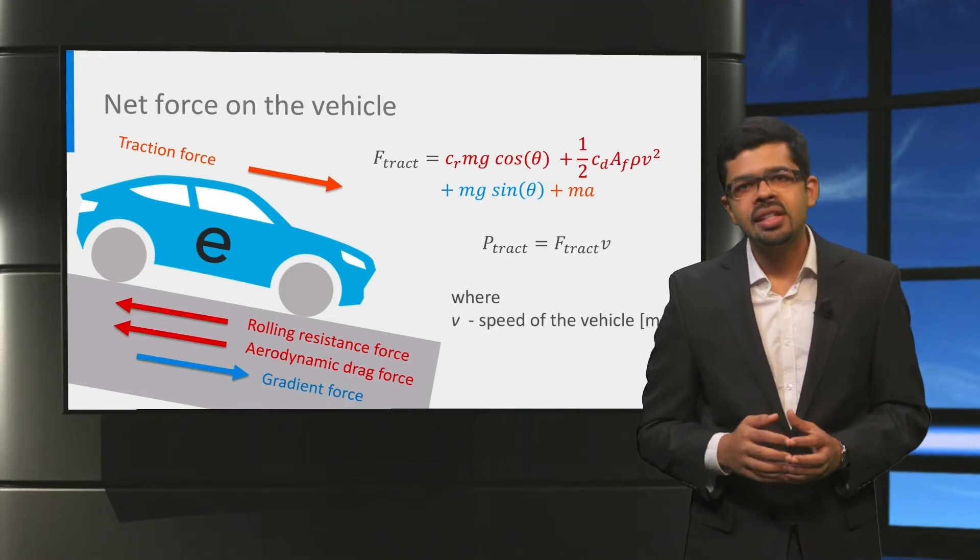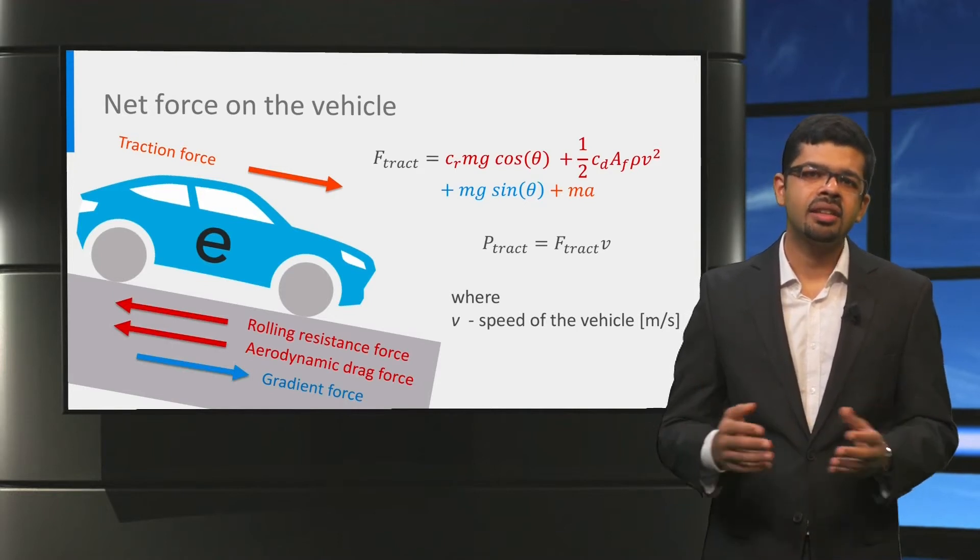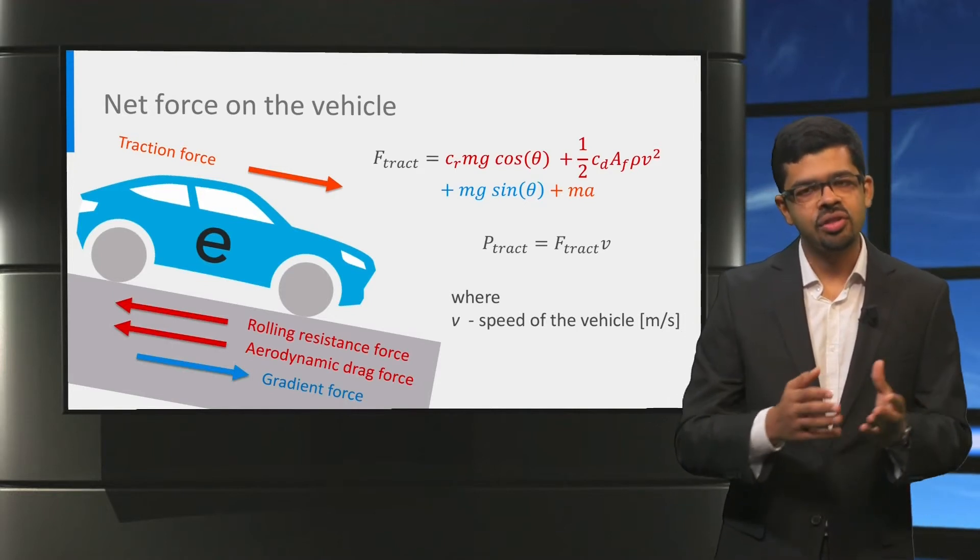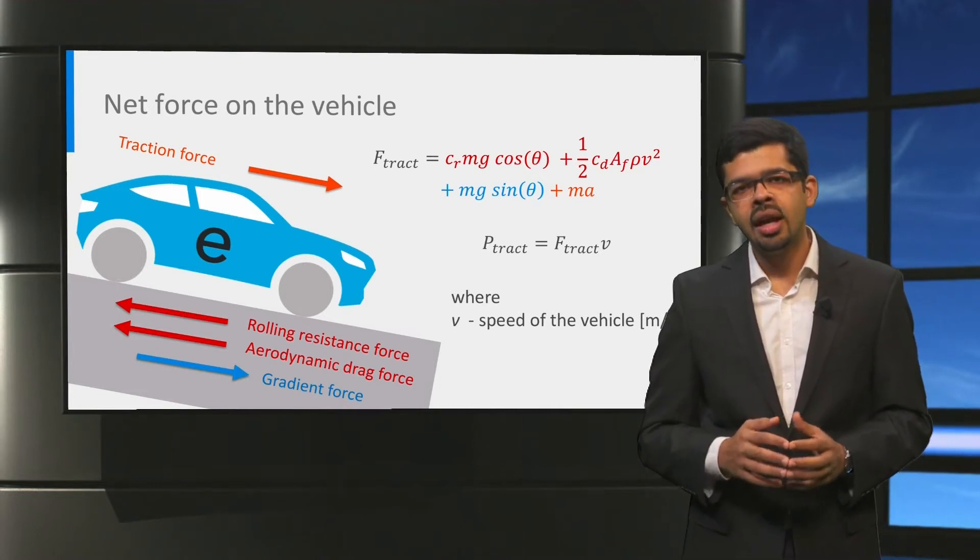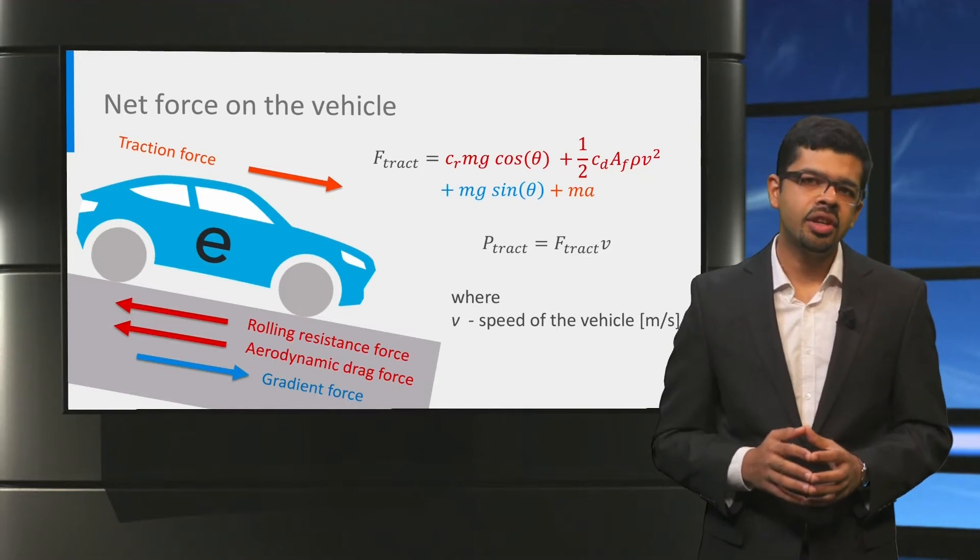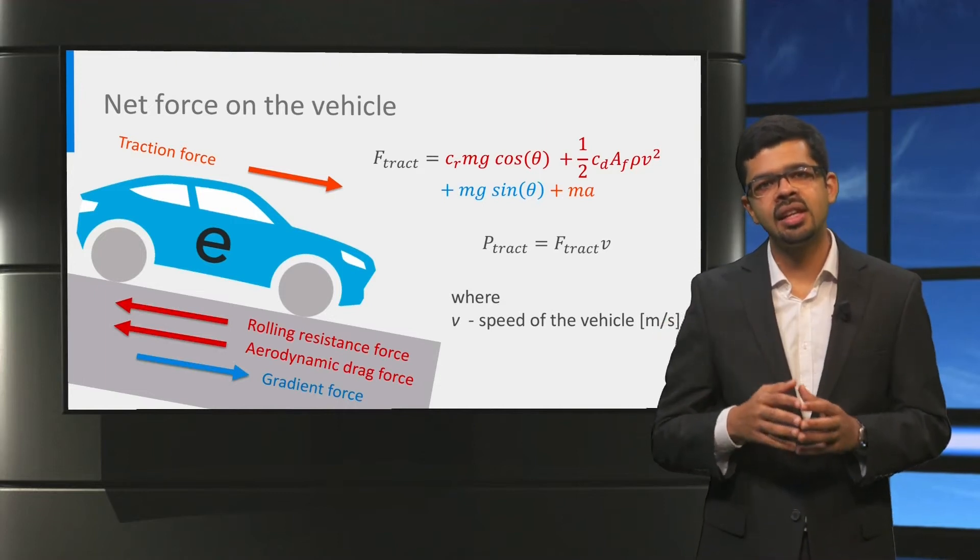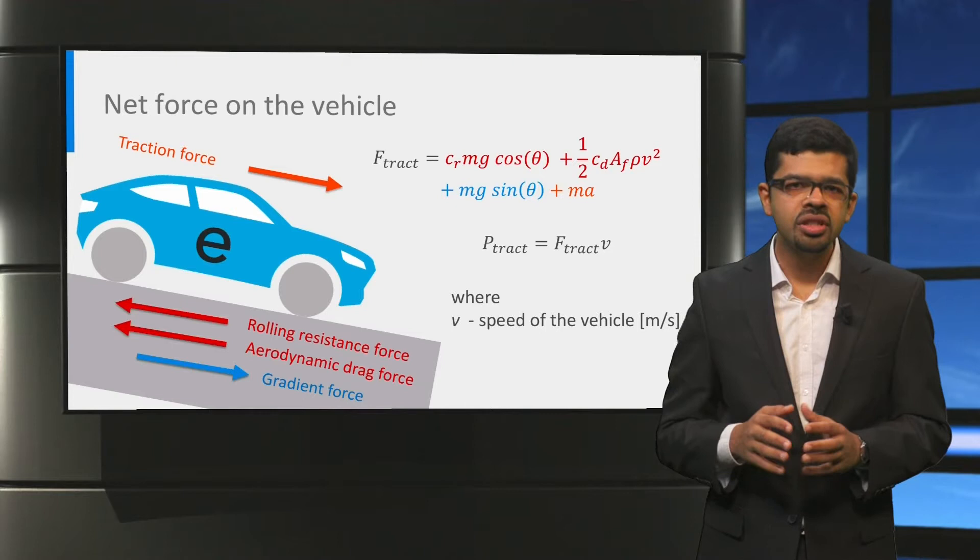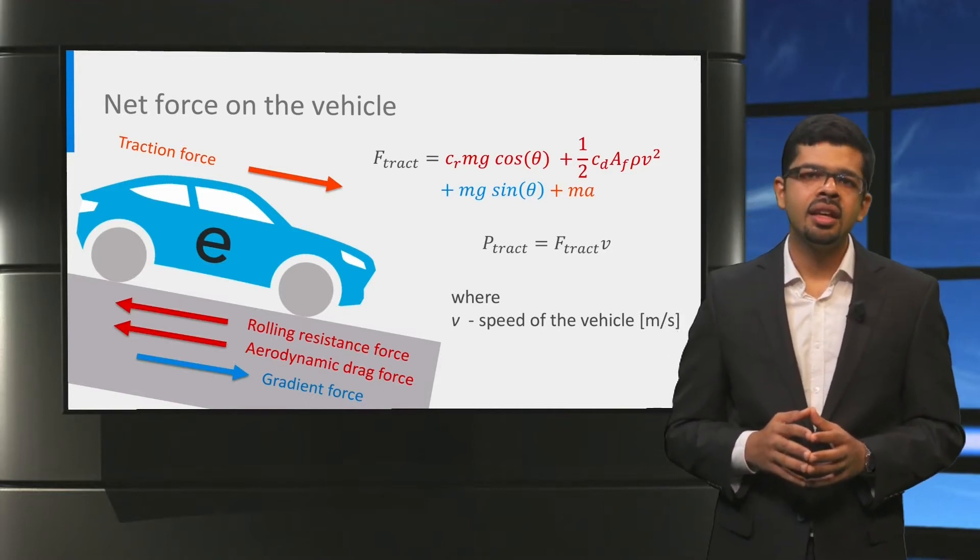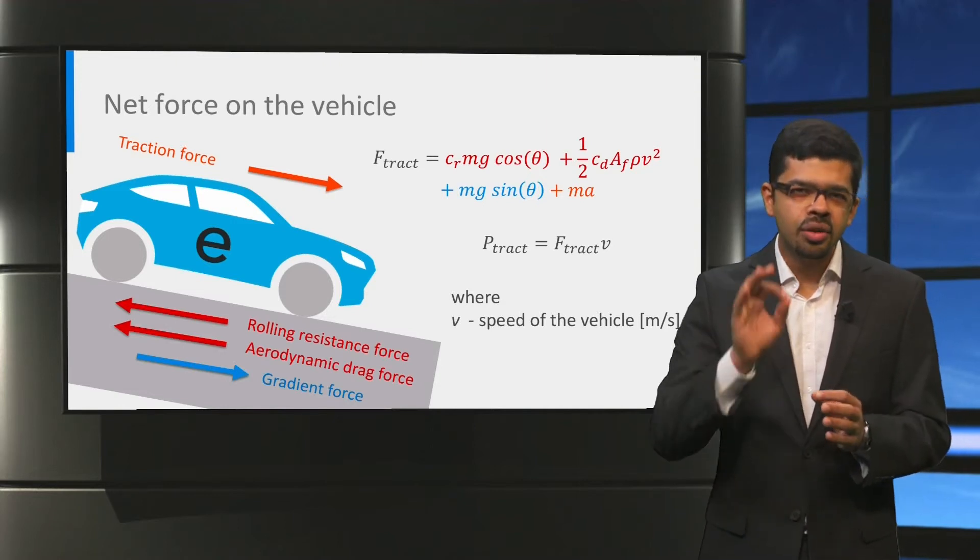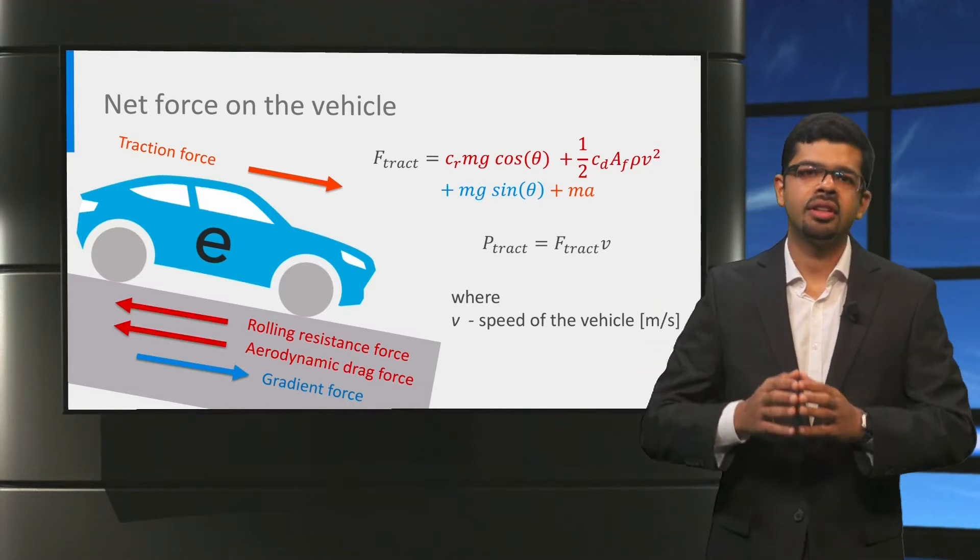If we need to estimate the power delivered by the powertrain Ptract, then we need to multiply the traction force Ftract that we saw earlier with the speed of the vehicle V. It is important to realize that in this lecture we only take into account the forces in the forward and reverse direction as they influence the powertrain. The forces in the other directions are neglected for simplicity. Secondly, the forces in the vehicle are assumed to be acting at one point. In reality, the forces are distributed all over the vehicle.